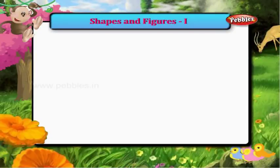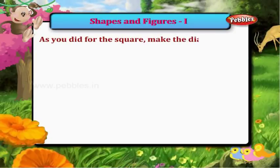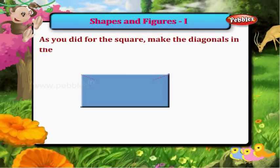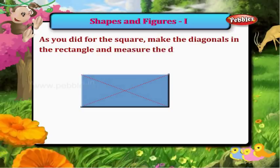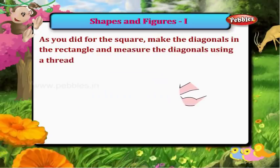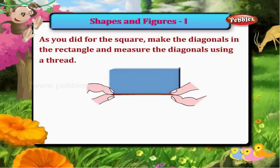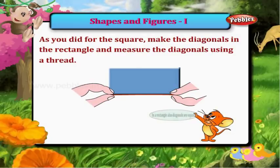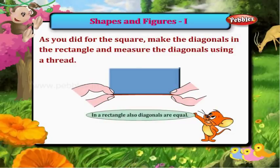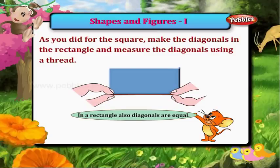As you did for the square, make the diagonals in the rectangle and measure the diagonals using a thread. In a rectangle also, diagonals are equal.